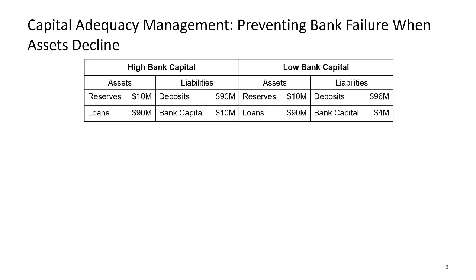Let's start with two scenarios: high bank capital and low bank capital. The high-capital bank has deposits of $90 million and bank capital of $10 million, with $10 million in reserves and $90 million in loans. The low-capital bank has deposits of $96 million and bank capital of only $4 million, with the same assets: $10 million in reserves and $90 million in loans.